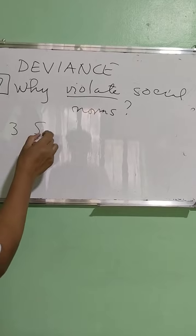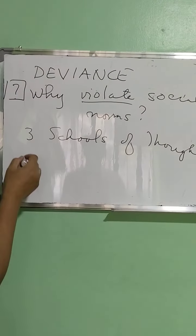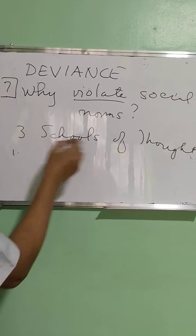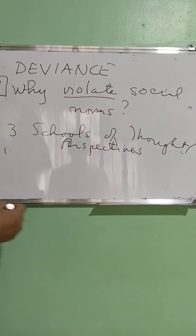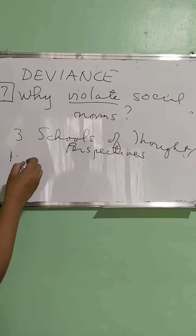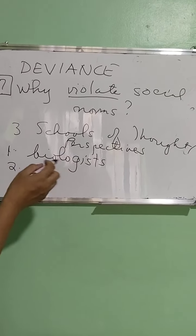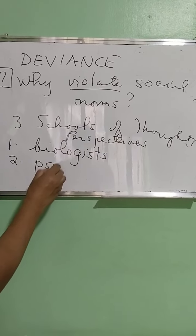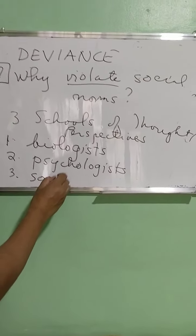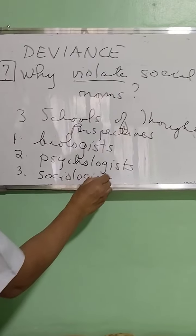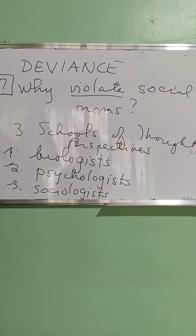There are three schools of thought. Let us discuss them one by one from each perspective. Number one is from the viewpoint of biologists, second from the viewpoint of psychologists, and third from the viewpoint of sociologists. There are three perspectives being advanced by these three groups explaining how come social norms are being violated.